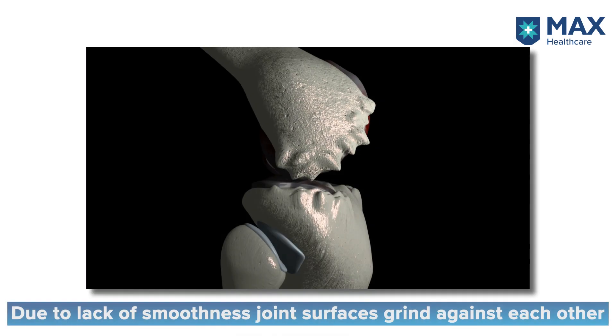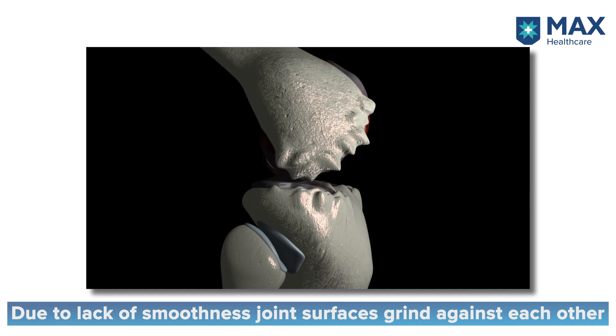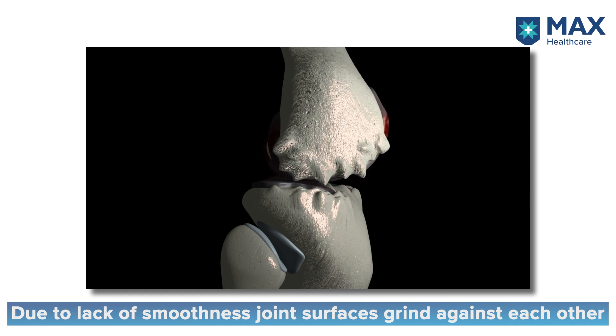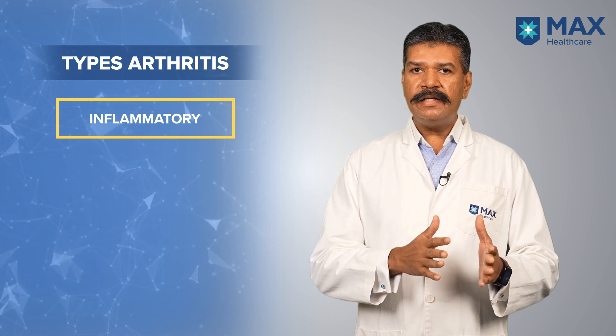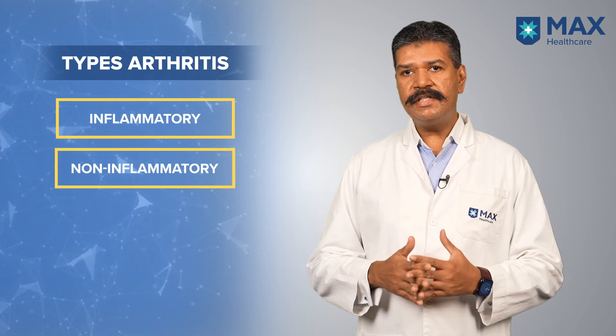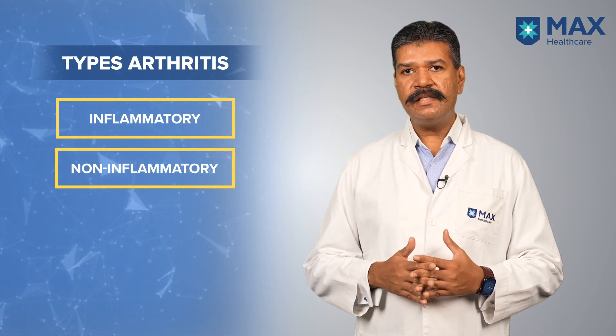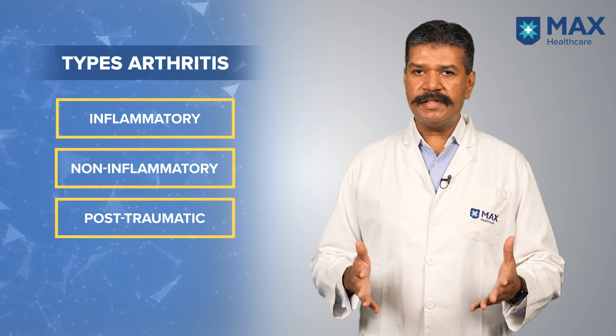The lack of lubrication leads to grinding of the joint surfaces, which leads to pain in the muscles and wasting of muscles — that is a term which encompasses arthritis. Speaking of types of arthritis, you could probably divide them into three broad categories: inflammatory arthritis, non-inflammatory or degenerative arthritis, and post-traumatic arthritis.